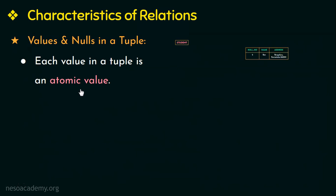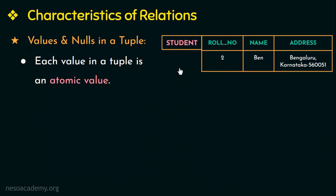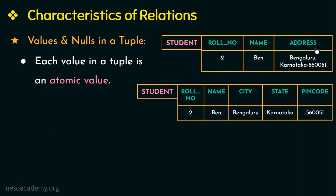Composite attributes are attributes that can be divided further, like address, which can be divided into city, state, pin code, etc. These composite attributes are not allowed in relational databases because their values are not atomic. Instead, composite attributes can be represented by their simple component attributes. So here I divided the composite attribute into city, state, and pin code, so each value in the tuple is atomic.